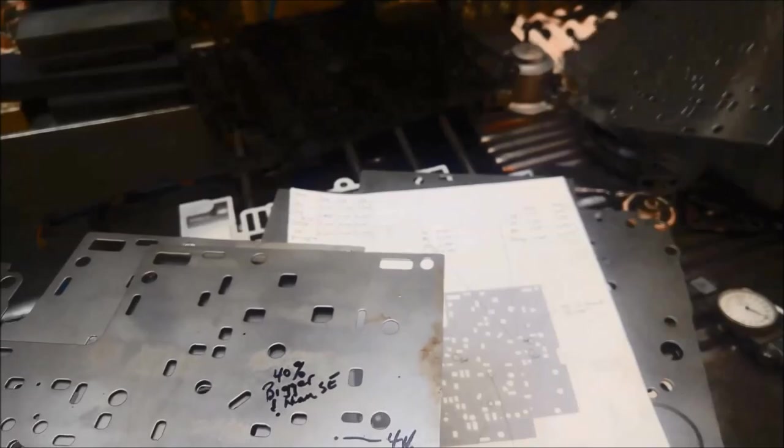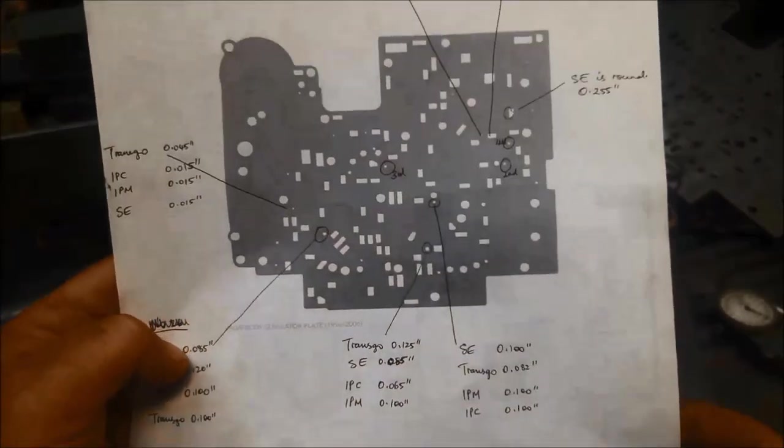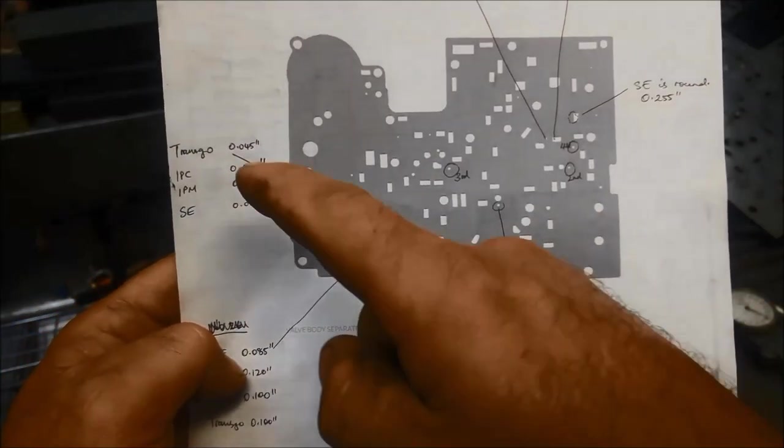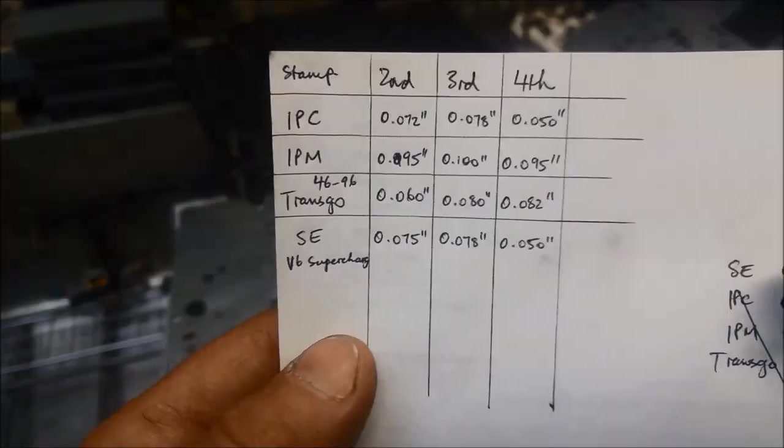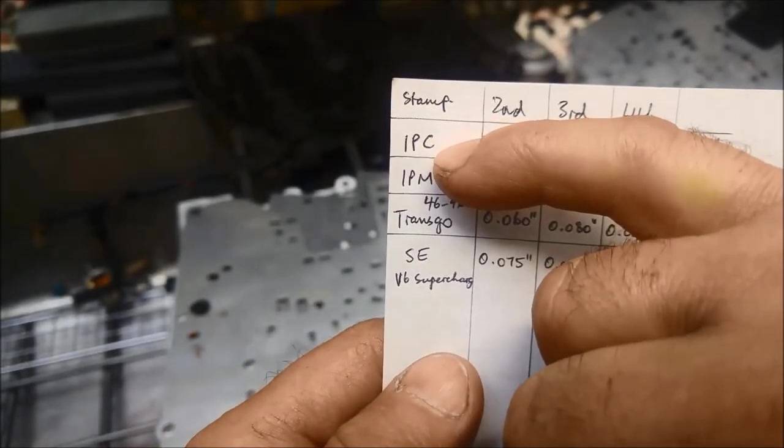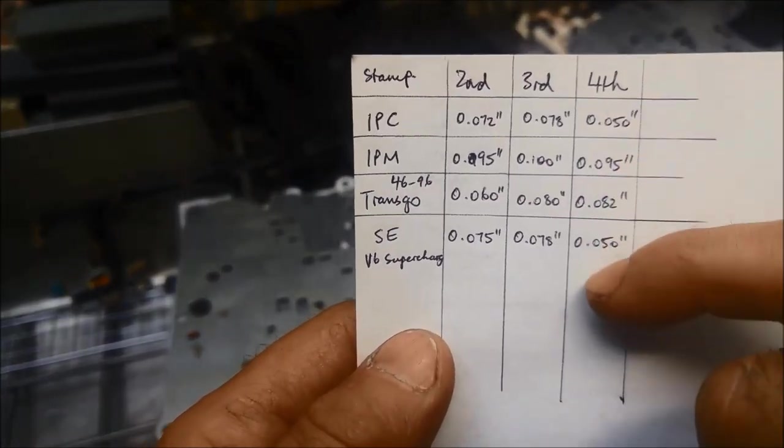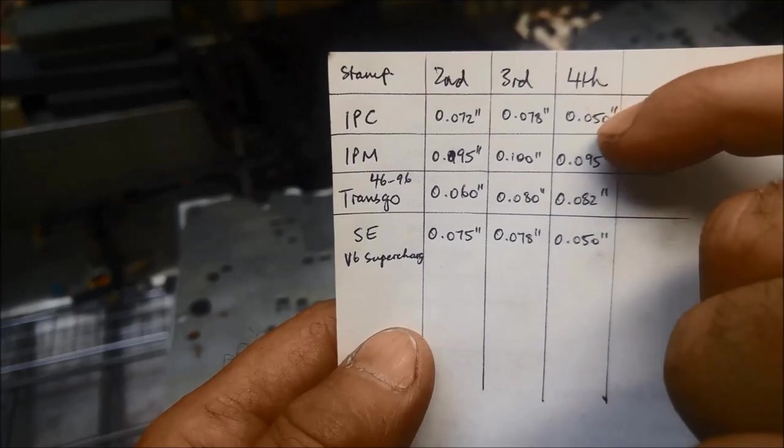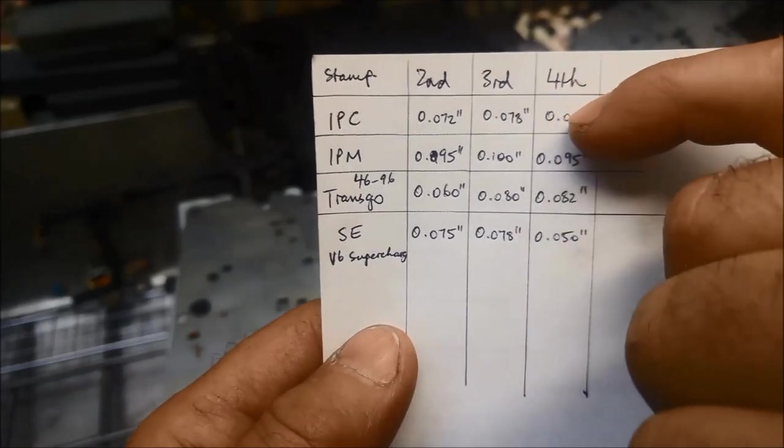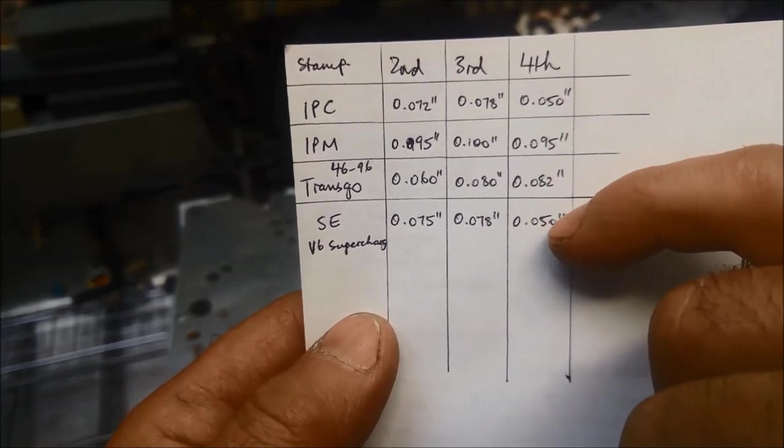That's just another old separator plate. So what I've gone and done, if you have a look on this chart, is I've gone through and compared all the holes that are different. We've got the IPC, which is the IPC stamped on the separator plate. Very similar sizes of the holes there. So our customer wants the 3-4 shift, applying a little bit more firmly.